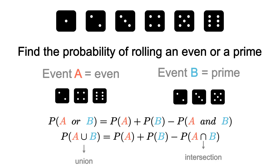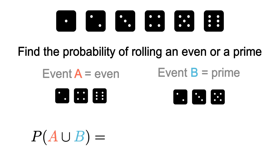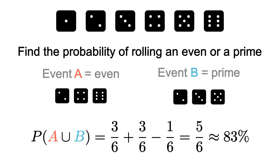To find the probability of rolling an even or a prime number: event A has three items, so that's 3 out of 6. Event B also has three items, so that's 3 out of 6. The probability of A and B — they have one item in common, which is die 2 — so that's 1 out of 6. We calculate 3/6 plus 3/6 minus 1/6, which gives us 5/6. Five-sixths as a percentage is about 83%, so there's an 83% chance of rolling an even or a prime number.